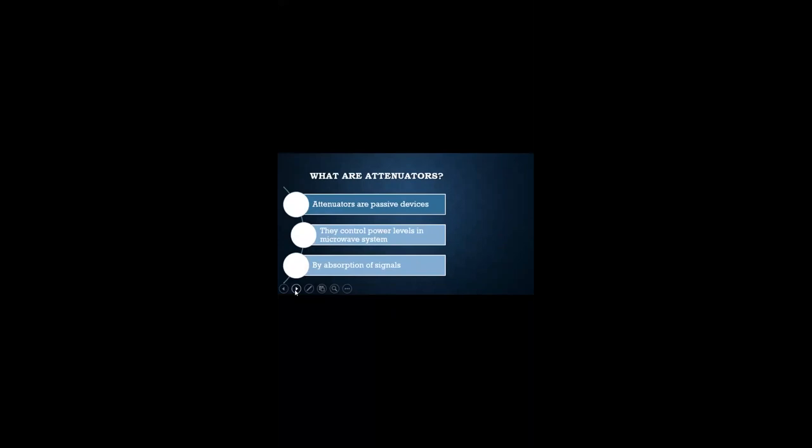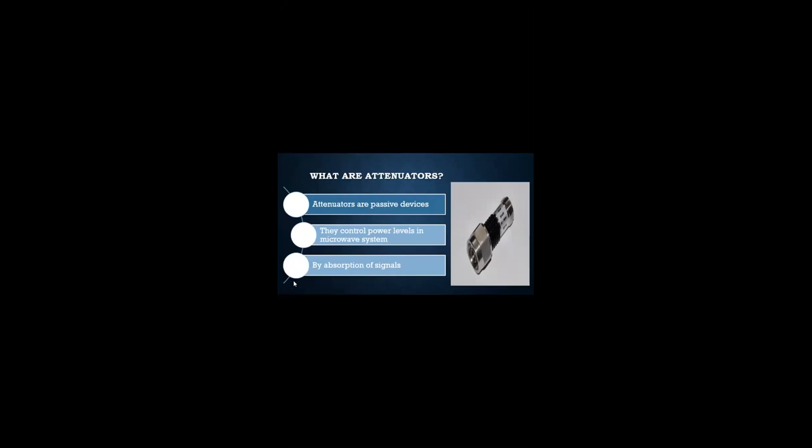What are attenuators? Attenuators are passive devices. They control power levels in microwave systems by absorption of signals. As you can see in the diagram figure, this is an attenuator.